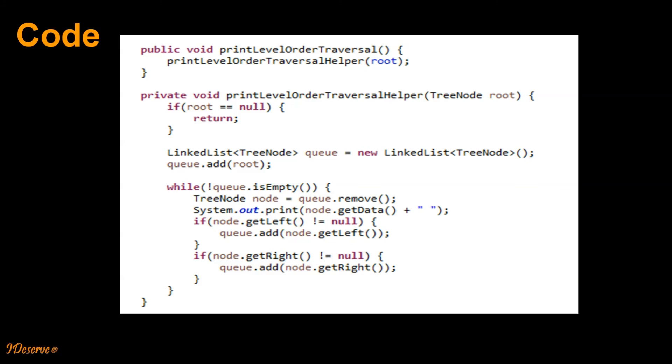Let's quickly run through the code. So we initialize one queue. We first add root to the queue and while queue is not empty we delete the node from the queue and if the node has left or right child we add those to the queue. We do this operation while queue is not empty.